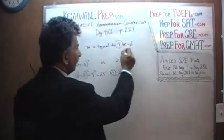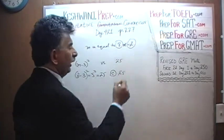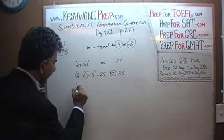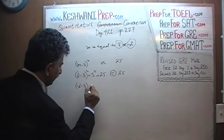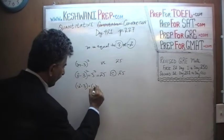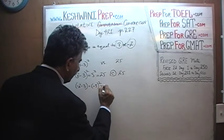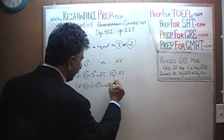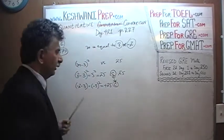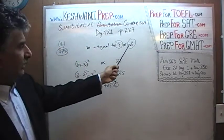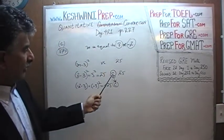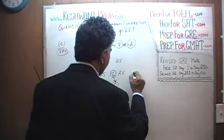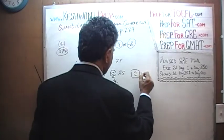m can also be negative 2. So we get (negative 2 minus 3), which gives us negative 5, and negative 5 squared is also positive 25. The answer is C in both cases — it doesn't matter whether m is 8 or negative 2, the answer in both cases is C.